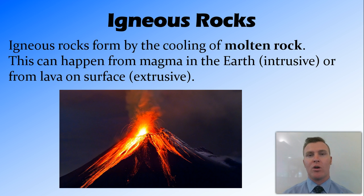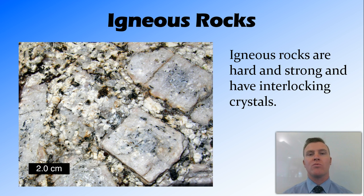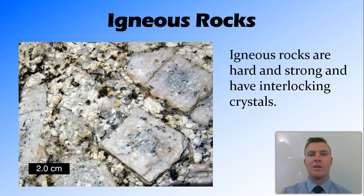Now these rocks have different properties based on how they formed. Some of the properties of igneous rocks is that they're strong and hard, and more importantly, they have interlocking crystals. The reason they have interlocking crystals is because when that molten rock cooled and the crystals grew, they formed at the same time, so these crystals interlock with each other.